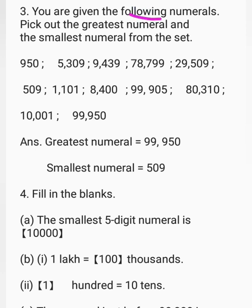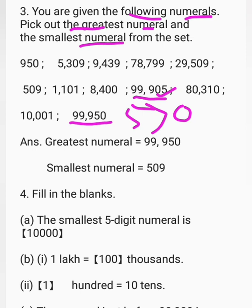You are given the following numerals — pick out the greatest numeral and the smallest numeral from the set. To find the greatest numeral, observe the digits from the highest place. Two numbers both have 9 in ten-thousands, thousands, and hundreds place, but in the tens place one has 5 and the other has 0. Since 5 is greater than 0, the greatest numeral is 99,950.